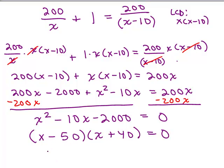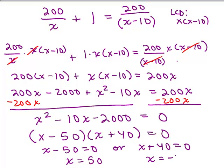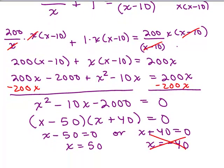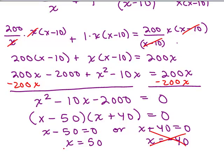Now we need to set each factor equal to 0. So x minus 50 equals 0, or x plus 40 equals 0. So either x equals 50, or x equals negative 40. Now, if you recall, x referred to a speed. So you know what? This one doesn't make any sense. A speed cannot be negative. So x equals 50, this looks like it might work. So now let's go back up to what x stood for.